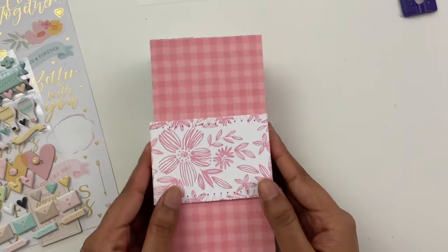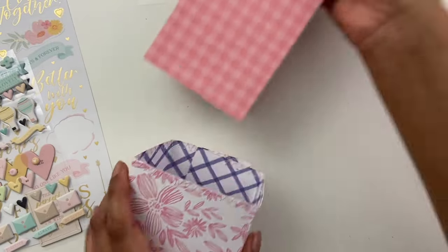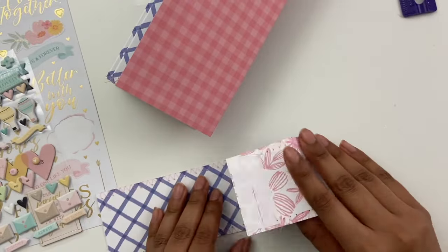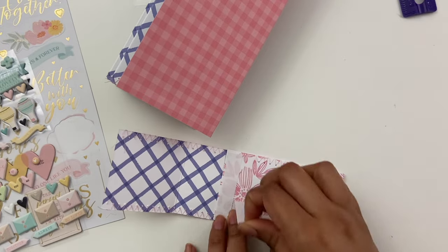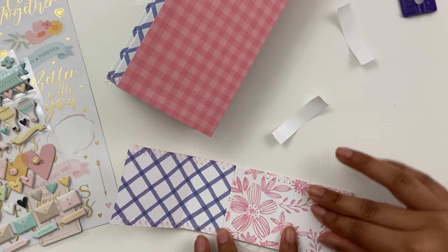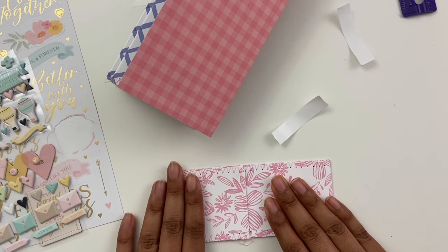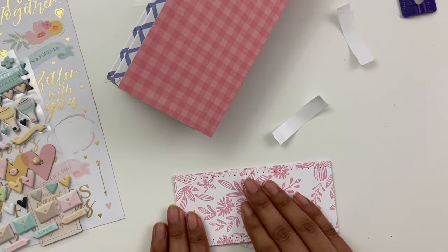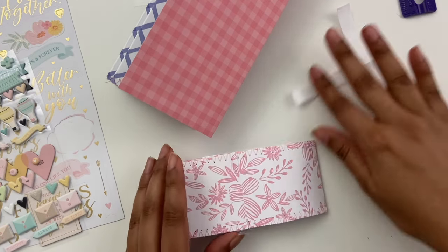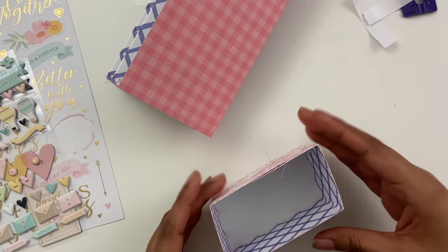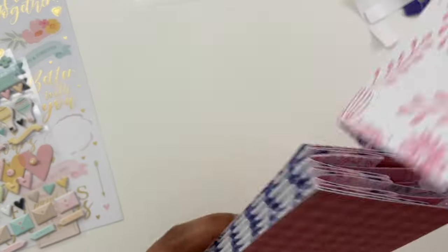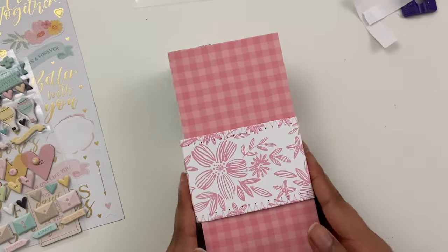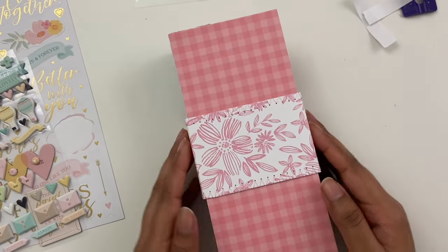And then here I am doing the belly band. So again, using one of the scraps from the 12 by 12 papers, and then wrapping that around the mini album, giving myself plenty of extra slack. I don't wrap it around tight at all, and then taping that.